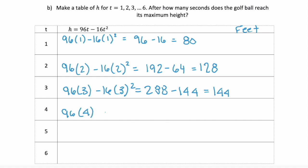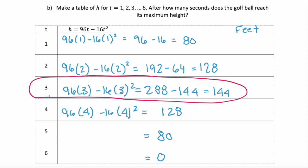96 times 4 minus 16 times 4 squared, and you should get 128. I trust that you can keep on doing these. At time 5 seconds, you should get 80. And we saw earlier at a time of 6 seconds, it's back on the ground. So that's a height of 0. So where is it at the maximum height? That would be here, 144 feet at 3 seconds.